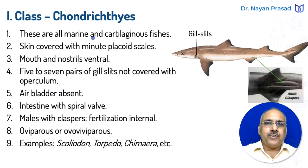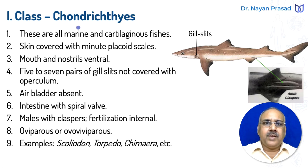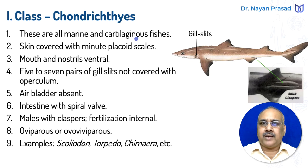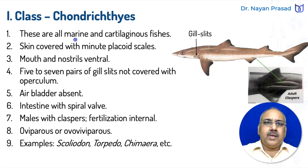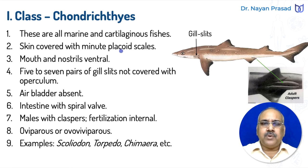We shall see the important features of these two different groups. Class Chondrichthyes: these are all marine and cartilaginous fishes. They are called cartilaginous fishes because they have a cartilaginous endoskeleton. Bone and cartilage are skeletal connective tissue; cartilage is the soft bony material. Their skin is covered with minute placoid scales — very small overlapping scales.